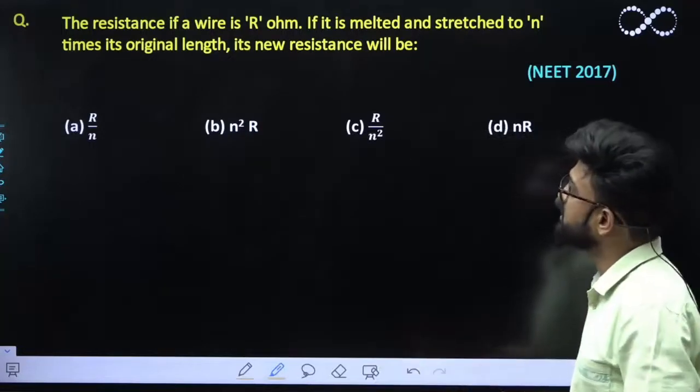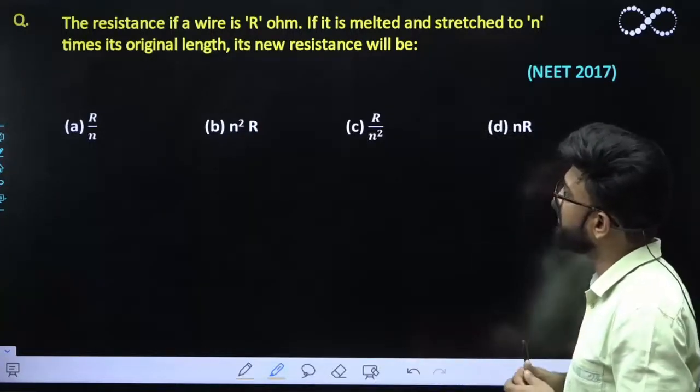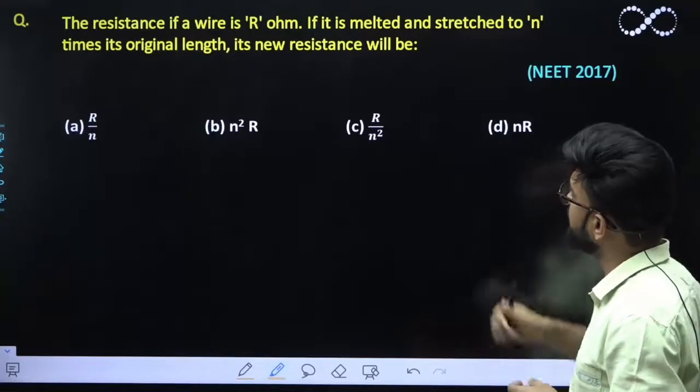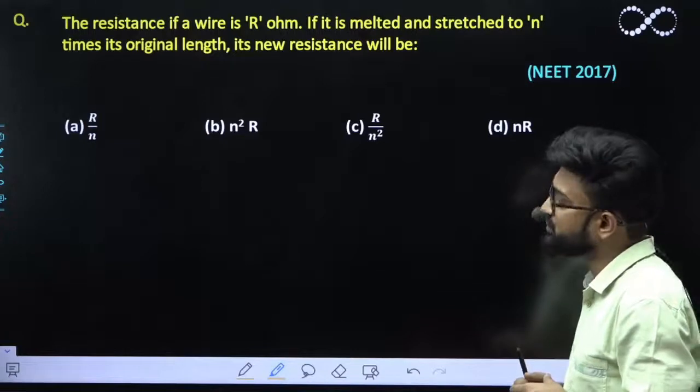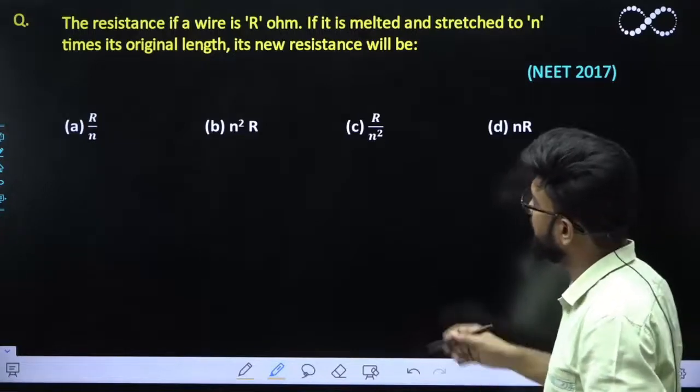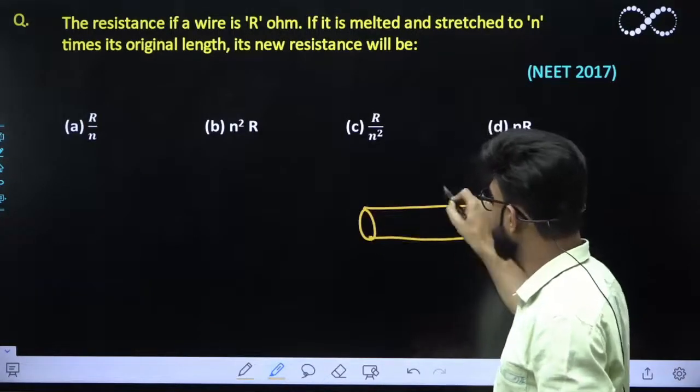The question says: the resistance of a wire is R ohm. If it is melted and stretched to n times its original length, what is the new resistance?